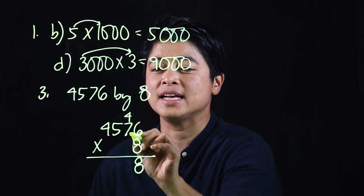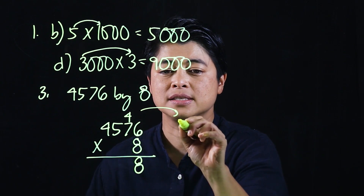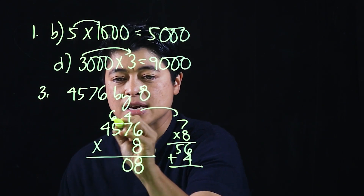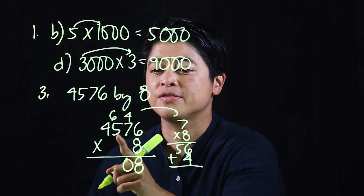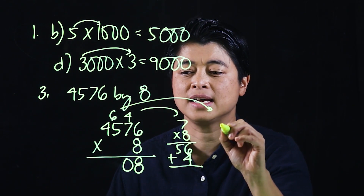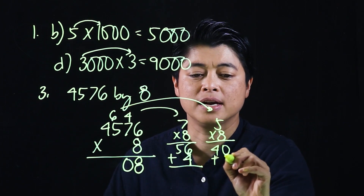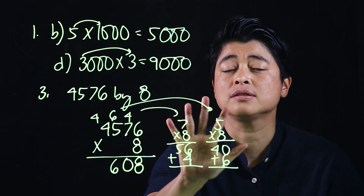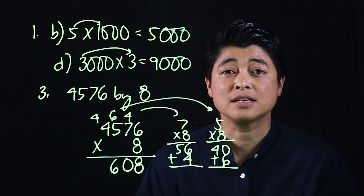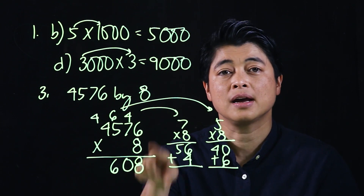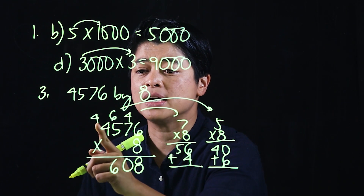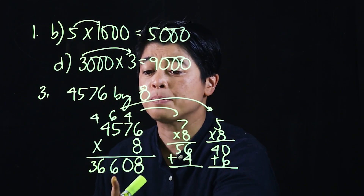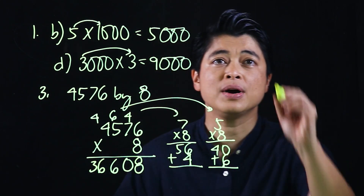Starting with 4576 × 8: eight times six is 48, write 8 carry 4. Eight times seven is 56, plus 4 gives 60, write 0 carry 6. Eight times five is 40, plus 6 gives 46, write 6 carry 4. Finally, eight times four is 32, plus 4 gives 36. So 4576 × 8 = 36,608. If kids are proficient they don't need to write the intermediate steps, but it helps to do so at the beginning.